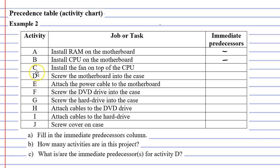Moving on to activity C, we want to install the fan, and remember that we're doing that on top of the CPU. So activity B — installing the CPU — needs to occur before activity C, meaning that activity B is the immediate predecessor of activity C.